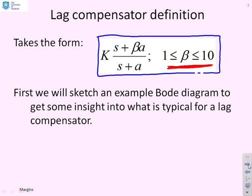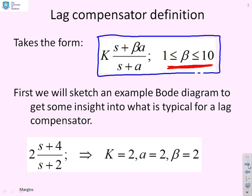Now we're going to sketch this to give you an insight about what this is, but we'll do it using a very particular example. So we'll use this example here, 2 times S plus 4 over S plus 2. And you'll see for this case, K is 2, A is 2, and beta is 2.